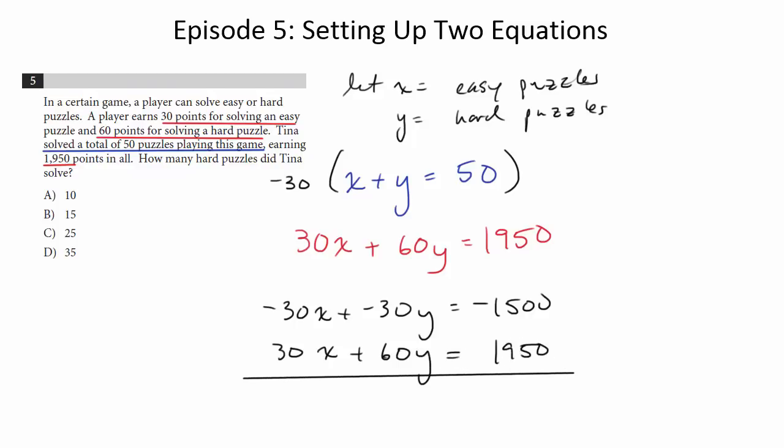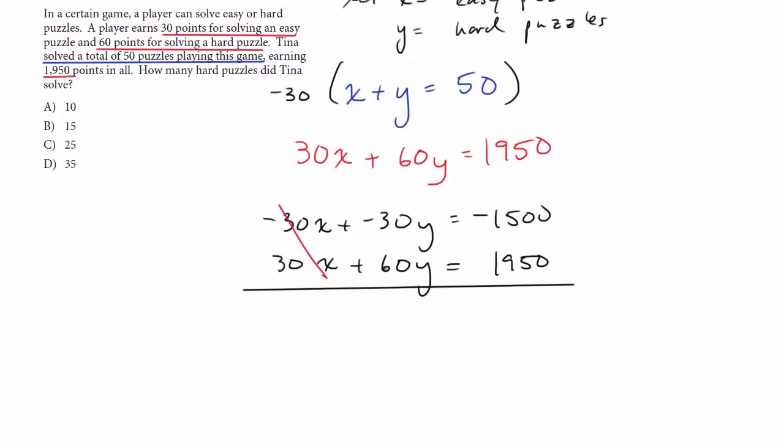So as you can see, I multiplied by negative 30 so that when I add these two equations, my X's cancel. I get 30Y equals, and this becomes 450. Cancel out a zero here, divide by 10. Now we'll divide both sides by three.